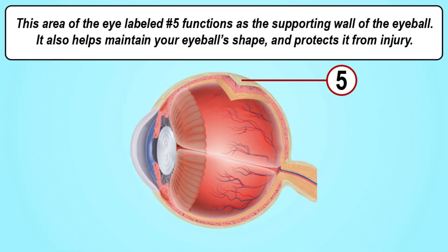This area of the eye labeled number five functions as the supporting wall of the eyeball. It also helps maintain your eyeball's shape and protects it from injury.